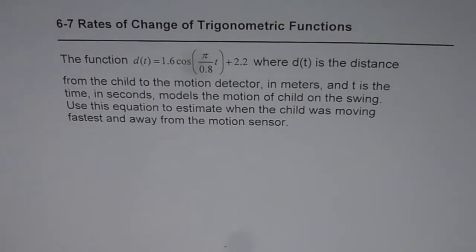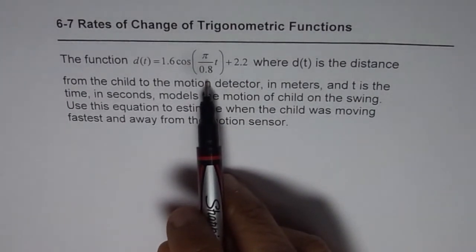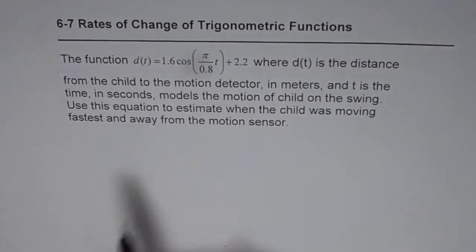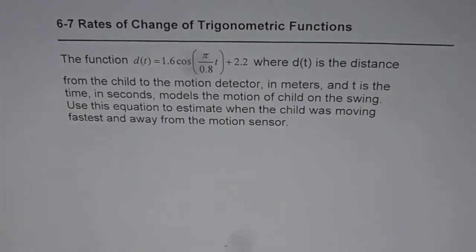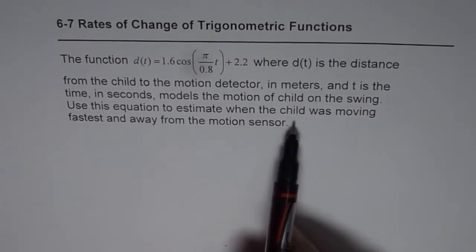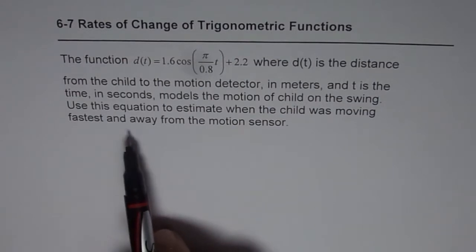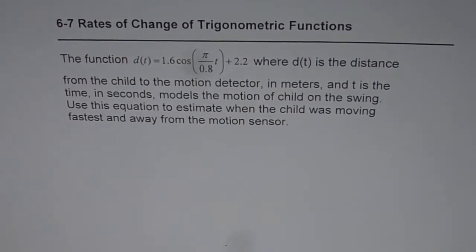I've taken up an equation from your book Nelson and we'll analyze this equation. The question is: the function d(t) = 1.6 cos(π/0.8 t) + 2.2 where d(t) is the distance from the child to the motion detector in meters, and t is the time in seconds, models the motion of child on the swing. Use this equation to estimate when the child was moving fastest and away from the motion sensor.